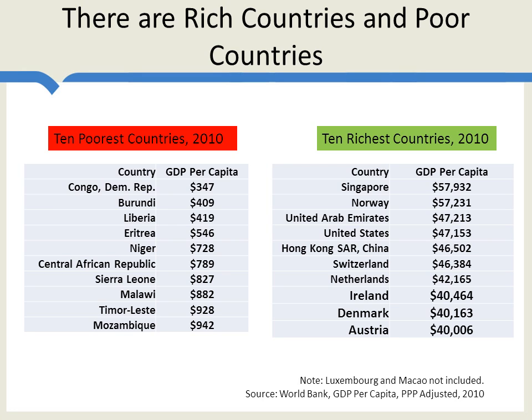Another thing to notice is that most of the poorest countries in the world — not all of them, but most — are in Africa. Timor-Leste used to be part of Indonesia, and of course there are other poor countries in the world, but the very poorest countries tend to cluster in Africa.